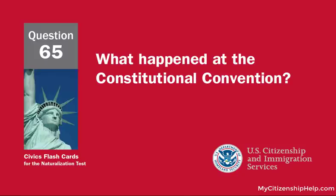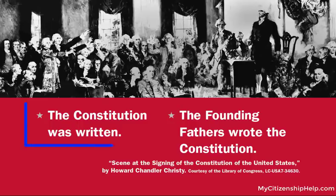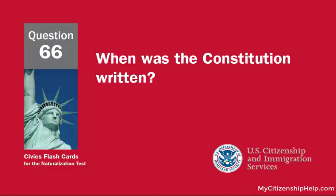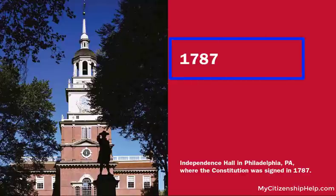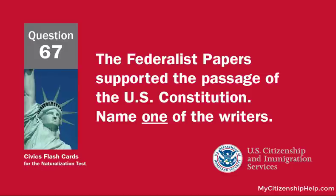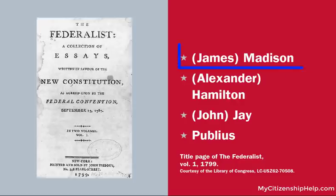What happened at the Constitutional Convention? The Constitution was written. When was the Constitution written? 1787. The Federalist Papers supported the passage of the U.S. Constitution. Name one of the writers. James Madison.